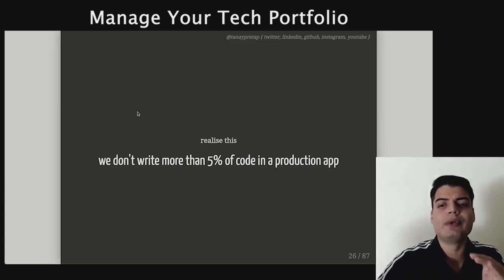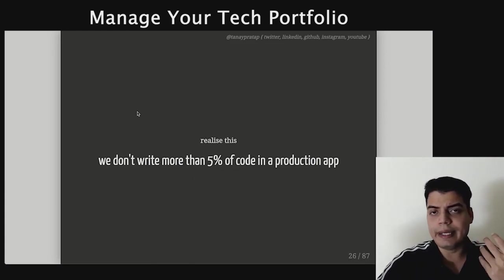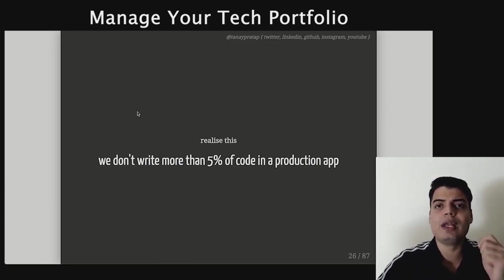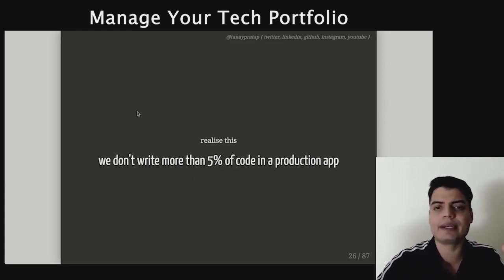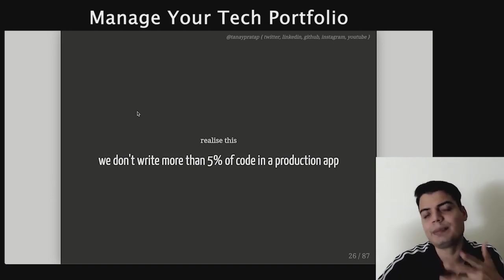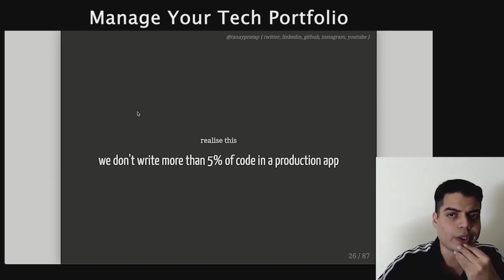You don't write more than 5% of your code. The next 95% is all libraries, framework, all of that code. So until you get the library and the developer ecosystem around it, it's very hard to get something into production.